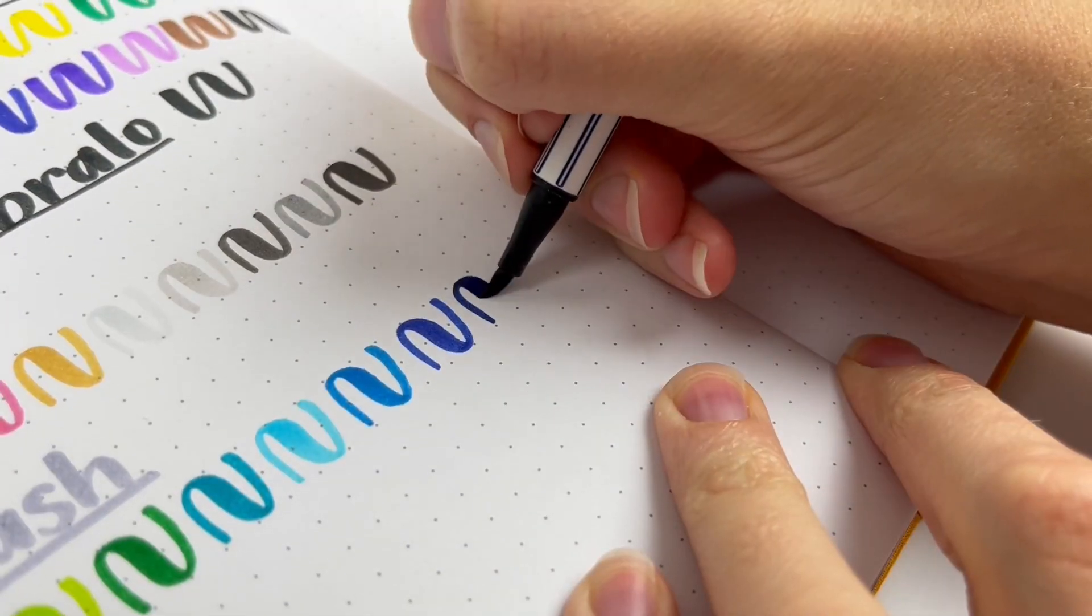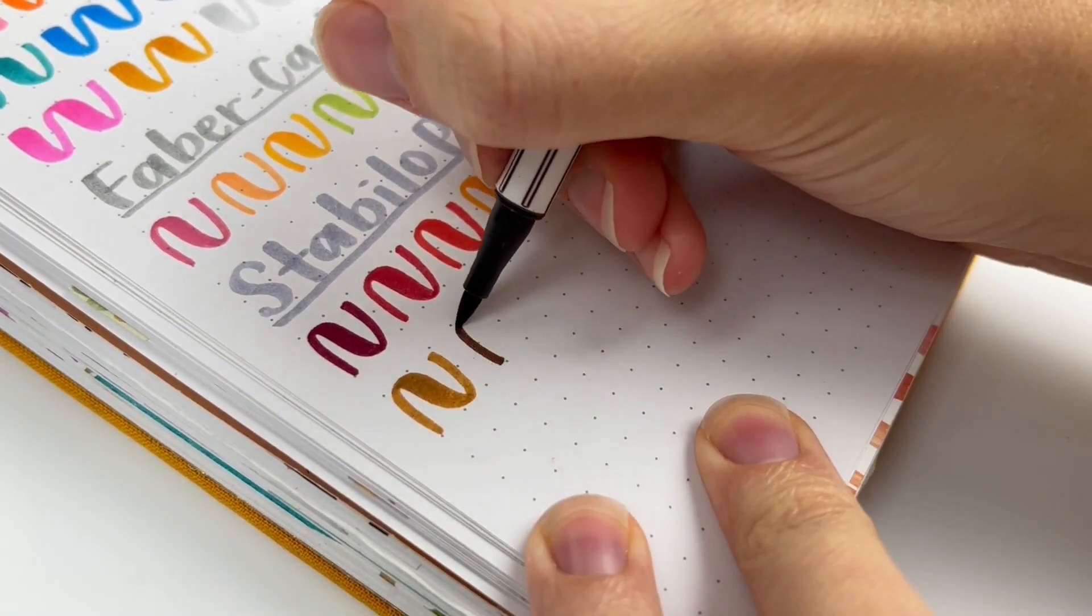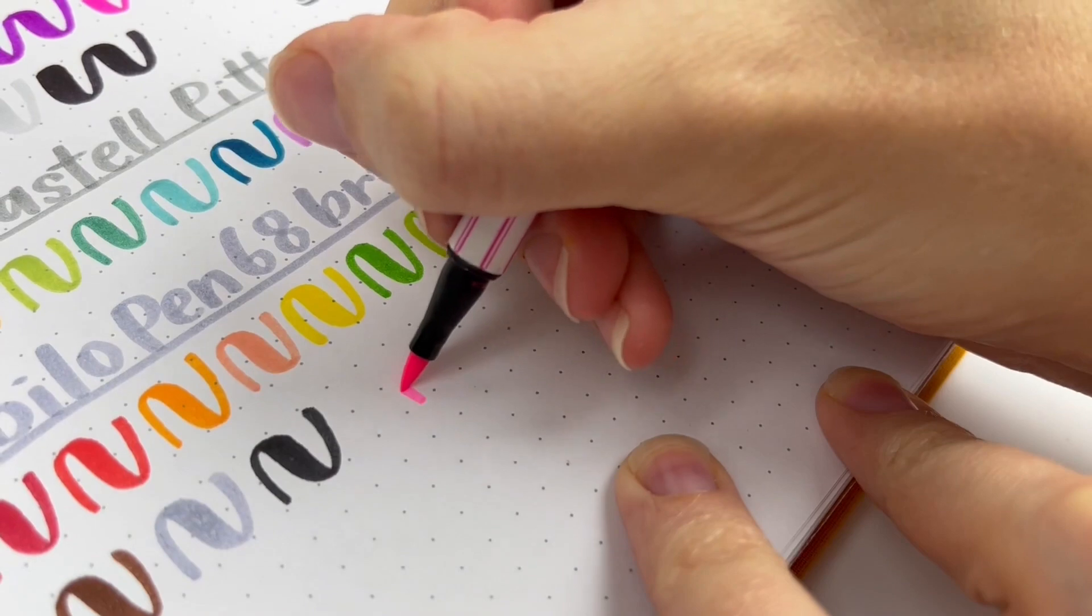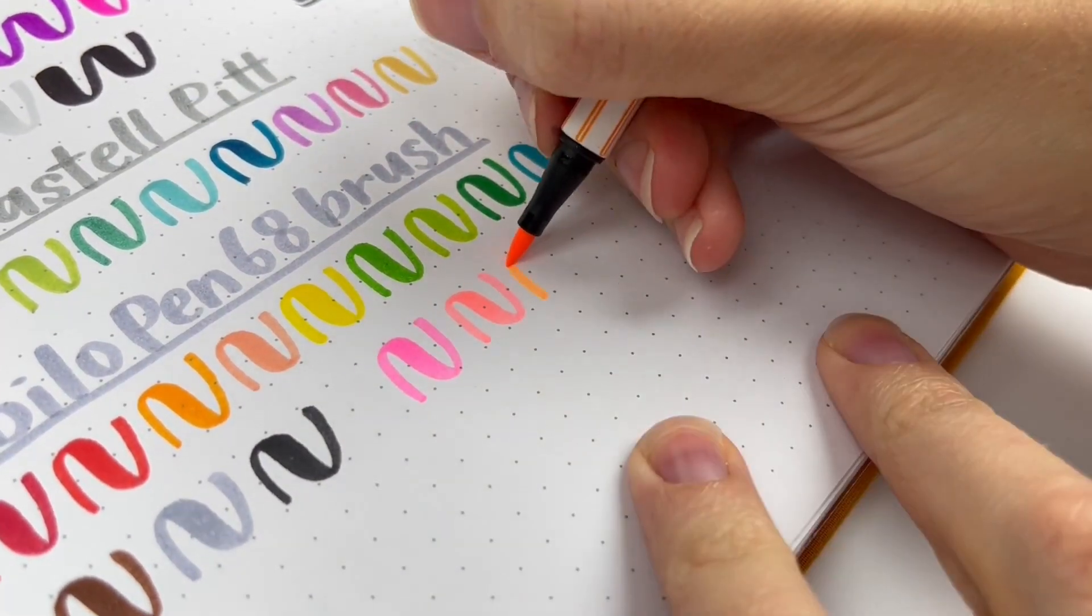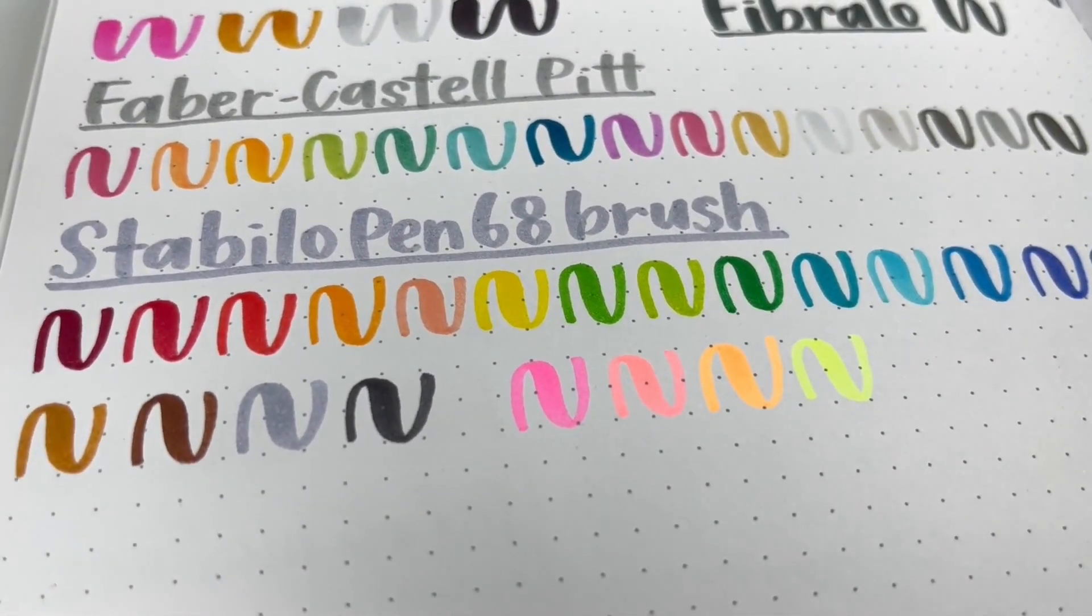Although my first black one is getting a little frayed because I've used it so much in the past couple of years. So maybe I'll throw in the Fibralo for the black with this set so somebody's not getting my frayed pen. And I really hope someone can appreciate how good these are.